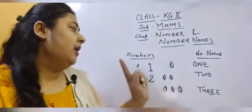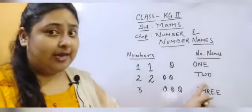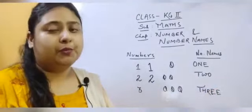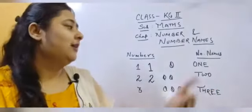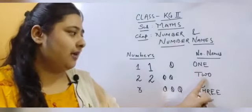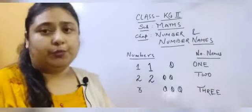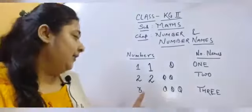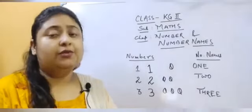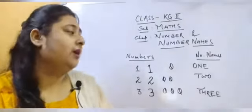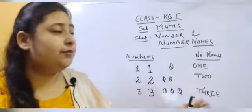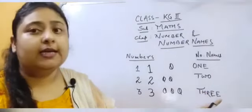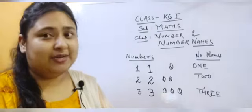So children, for number 2, the number name is T-W-O. Let's repeat, children. Now our third number is number 3. Now learning about the number names. So how do we spell number 3? T-H-R-E-E. Let's repeat, children.